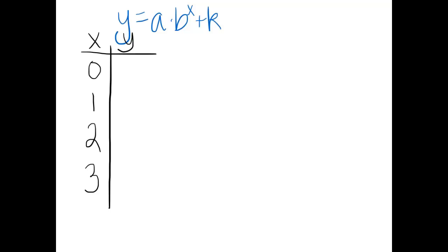So here's x and here's y. If I plug in 0, we get a times b to the 0 plus k. That's just a plus k. If I plug in 1, we get a times b to the 1st plus k. If I plug in 2, we get a times b squared plus k. And then we get a times b cubed plus k. I'm just trying to see if I can find some sort of pattern in general that I can apply to all exponential functions of this form.